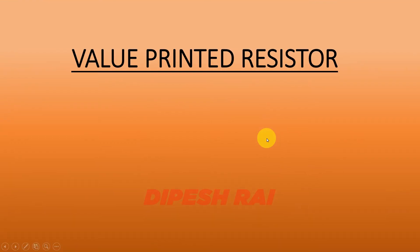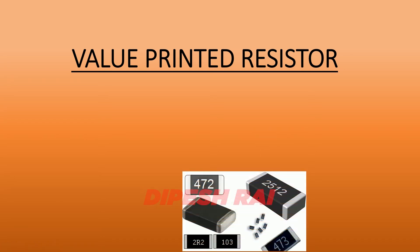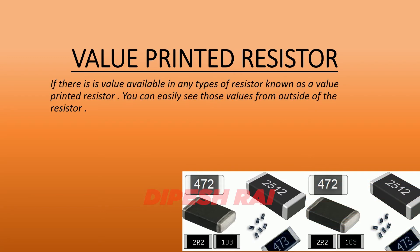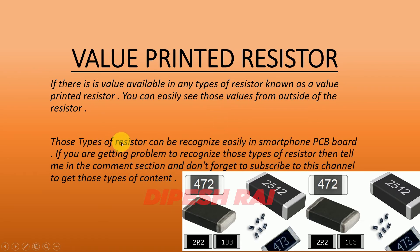First of all, we will discuss about the value printed resistor. So what is a value printed resistor? This is the image of the value printed resistor. If there is a value available on any type of resistor, it is known as a value printed resistor. You can easily see those values from outside of the resistor. There are a few numbers on it — those are known as value printed resistors. You can check this using a magnifying glass. These types of resistors can be recognized easily in smartphone PCB boards.